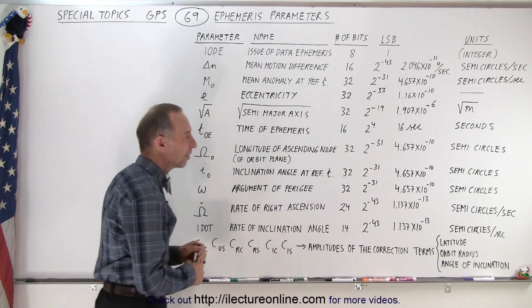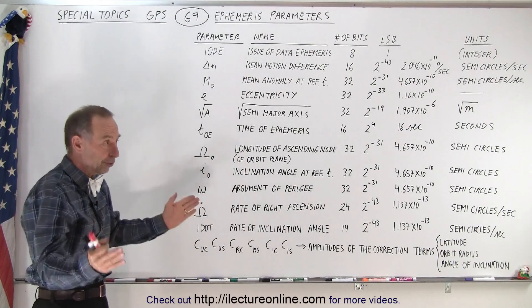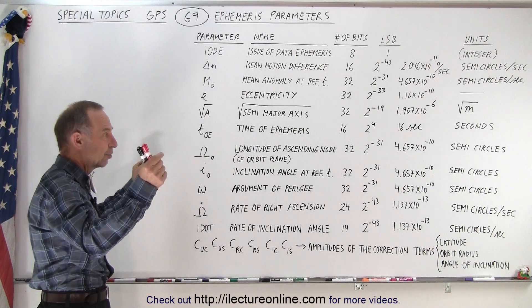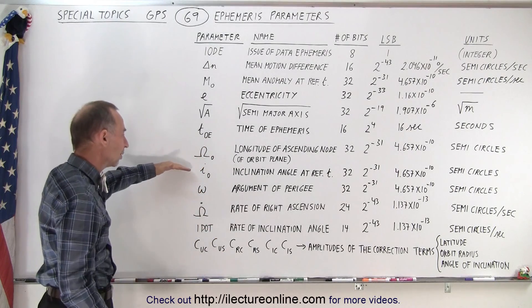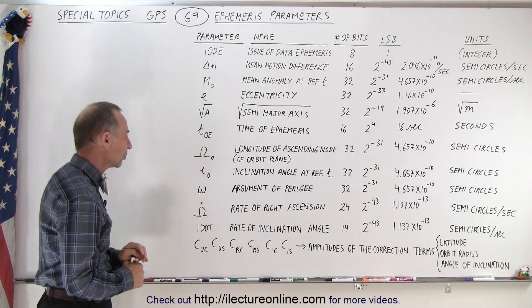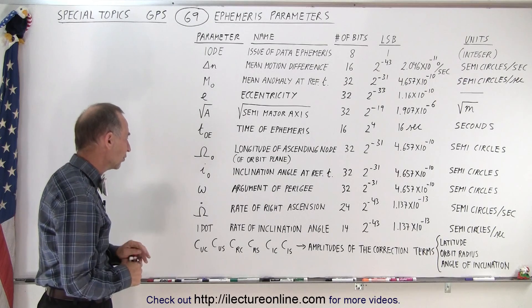4.657 times 10 to minus 10 semicircle. So it's actually a small segment of the semicircle that we want to be able to keep track of as it changes. We want to know the exact precise angle of inclination.